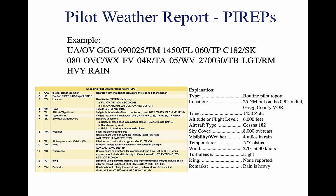PIREPs provide valuable information regarding the conditions as they actually exist in the air, which cannot be gathered from any other source. Pilots can confirm the height of bases and tops of clouds, locations of wind shear and turbulence, and the location of in-flight icing. When unexpected weather conditions are encountered, pilots are encouraged to make a report to an FSS or ATC. When a pilot weather report is filed, the ATC facility or FSS will add it to the distribution system to brief other pilots and provide in-flight advisories.